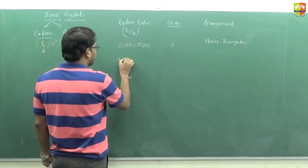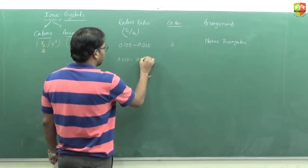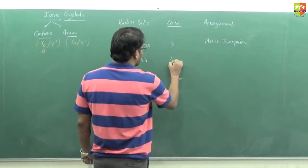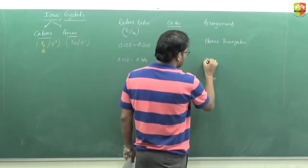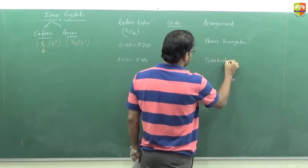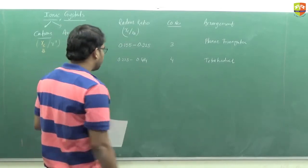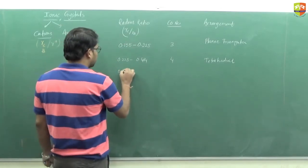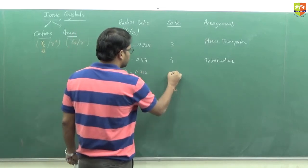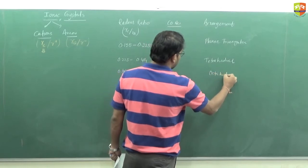The next range is 0.225 to 0.414 — the coordination number is 4 and the arrangement is tetrahedral. We get a tetrahedral void here.